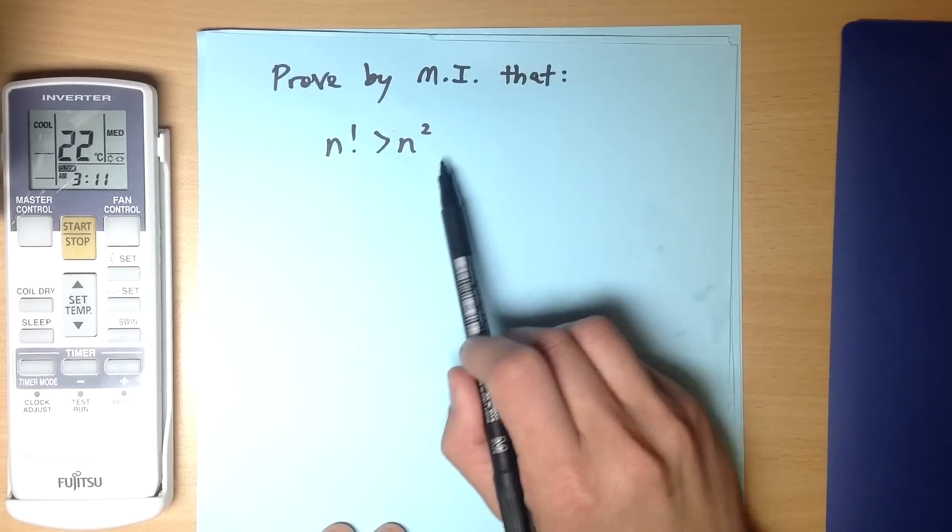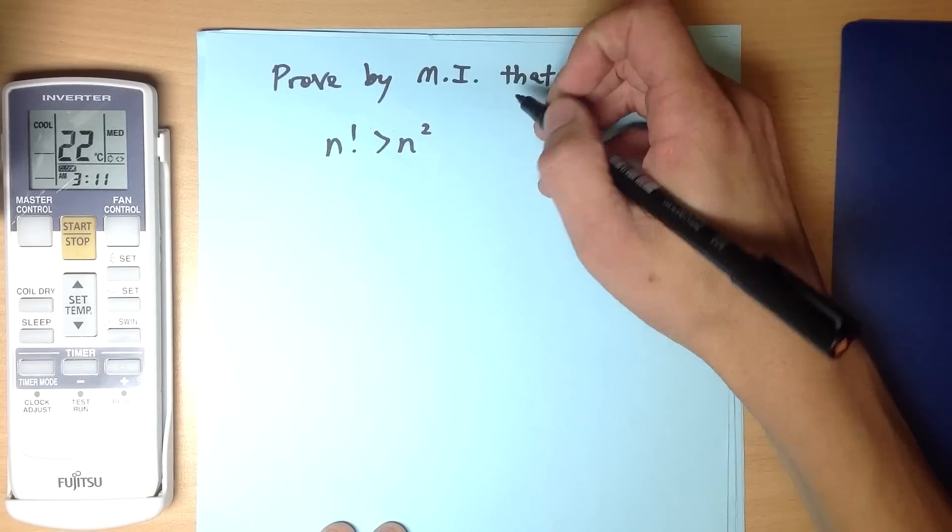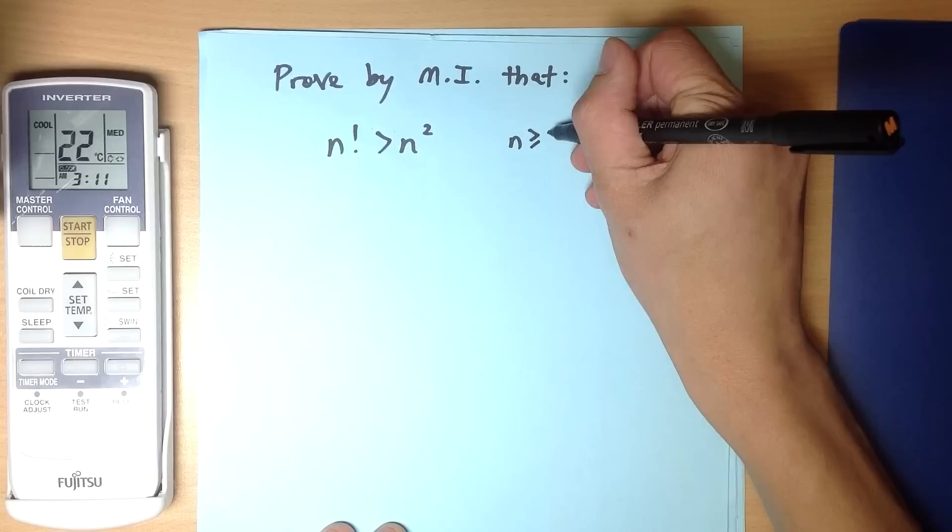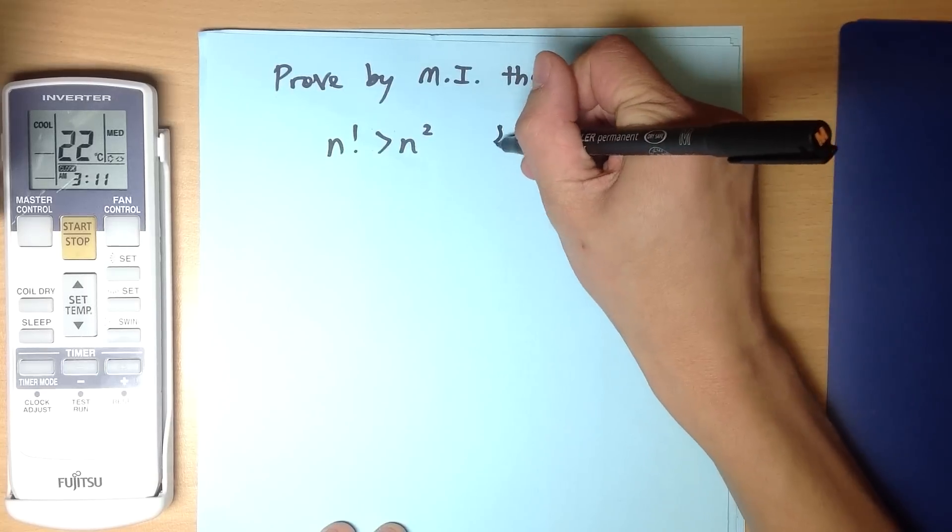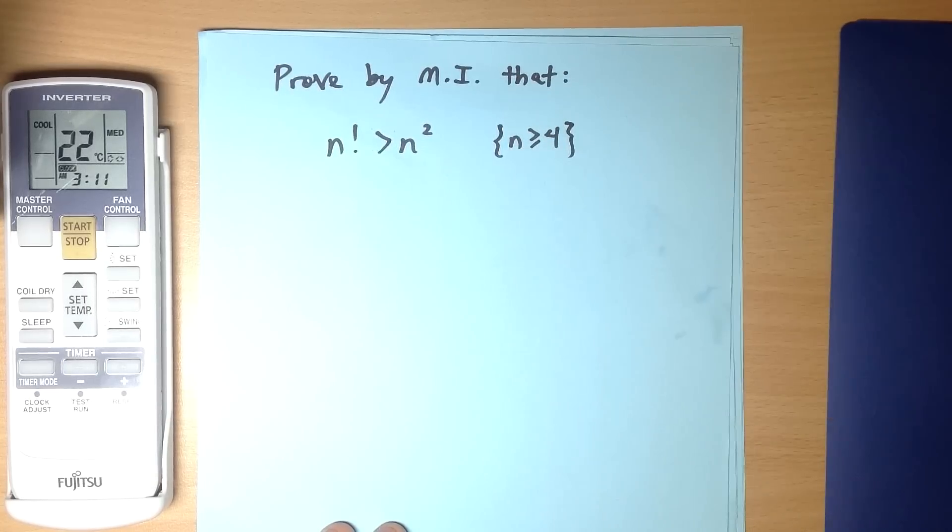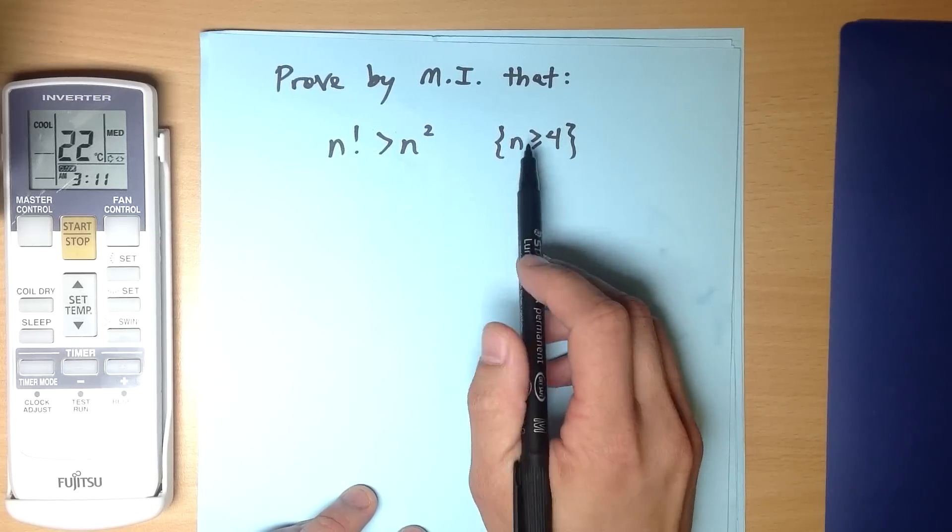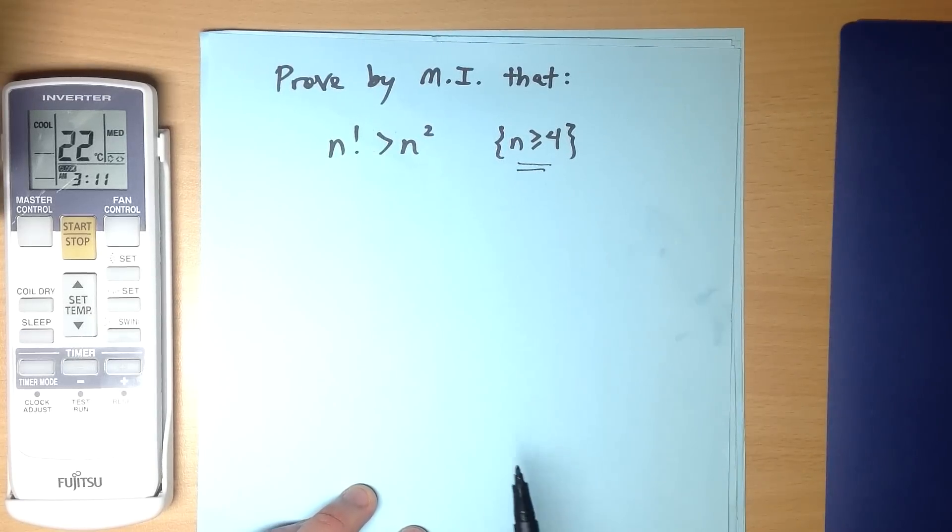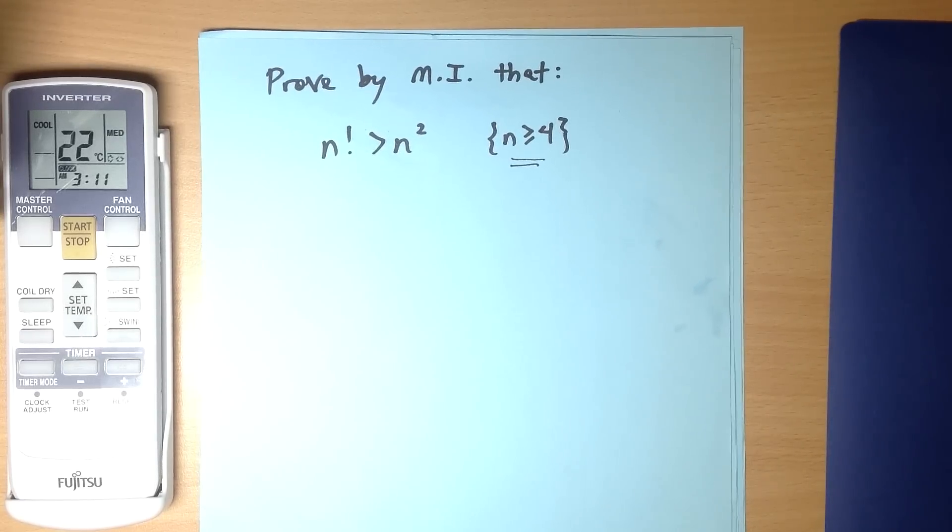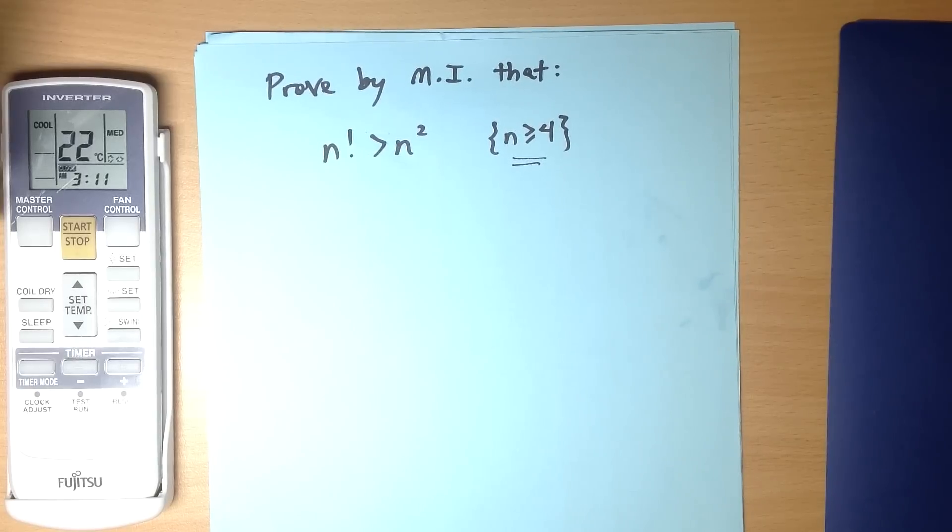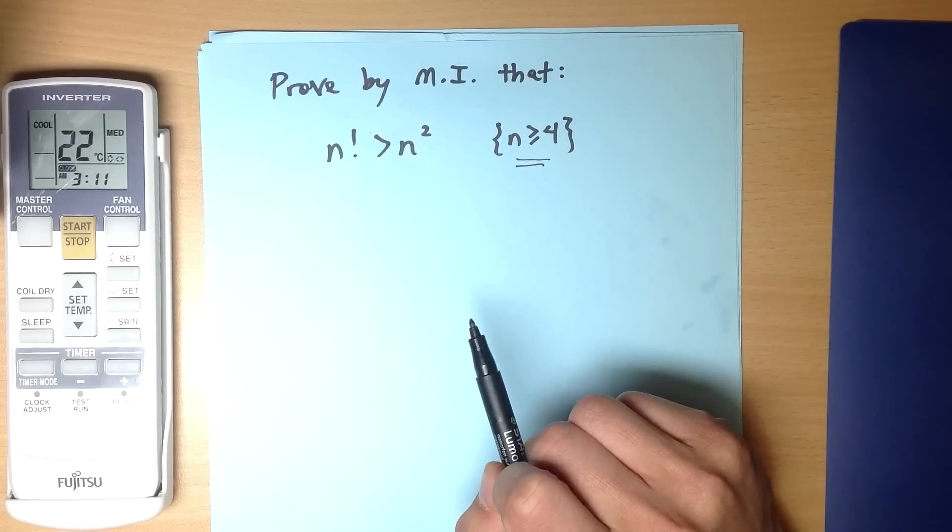The first value where this statement, this inequality, is actually true is n is greater than or equal to 4. Well n equals 4 is the first case and then 5, 6, 7 and so on, it works just fine. So the person who's trying to solve that, if you didn't have that included as part of your question, that might be why you're having difficulty proving it, because we'll need this fact later on.